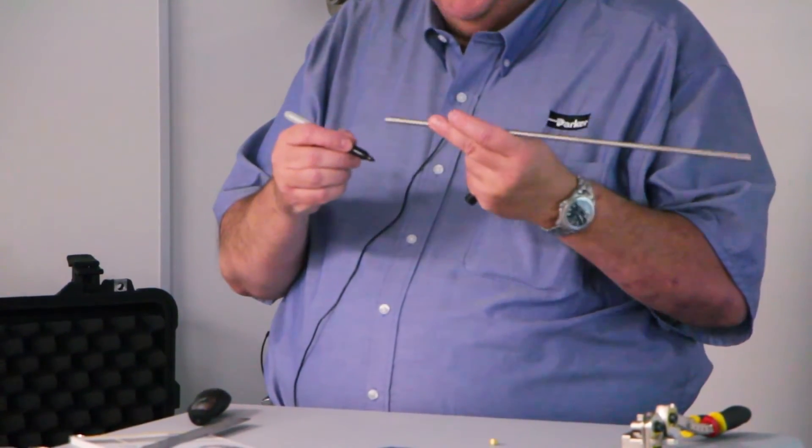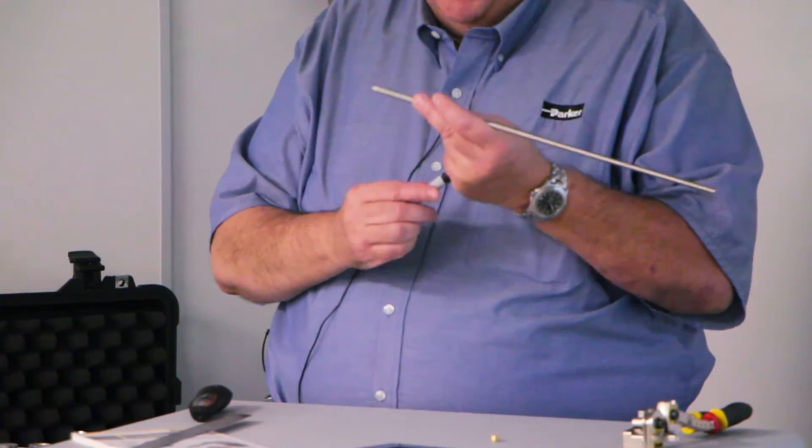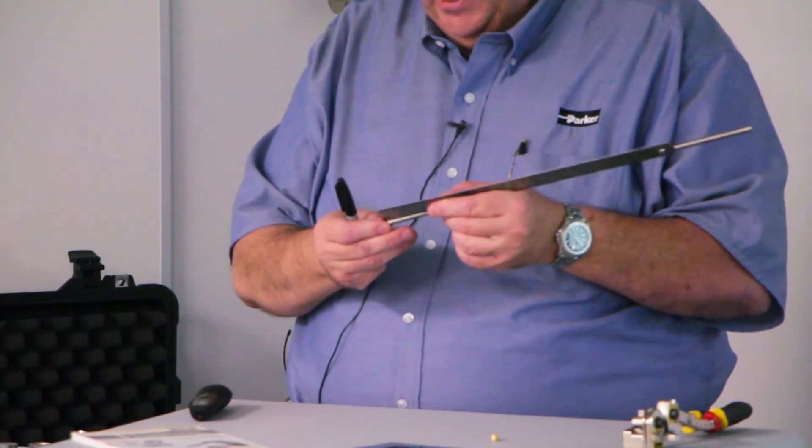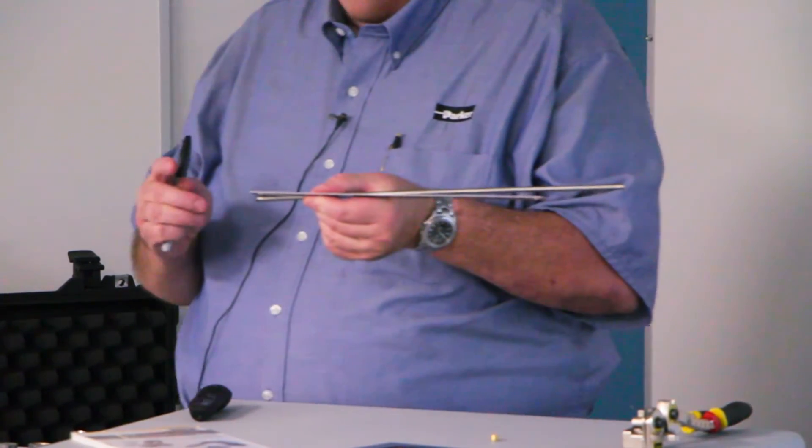So pick any end of the tube. I just like to put a solid mark around it. And once you do that, take the ruler as we have here. Take the very end of the tube. Now these particular rulers, zero is at the very end. Be very, very careful.